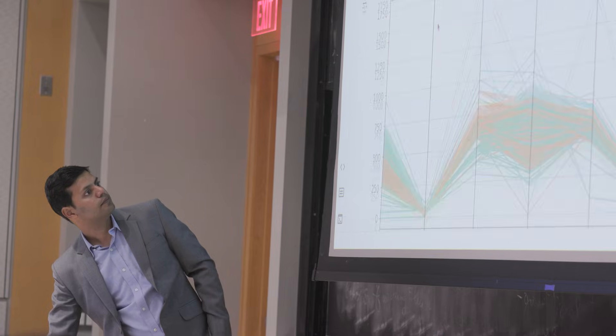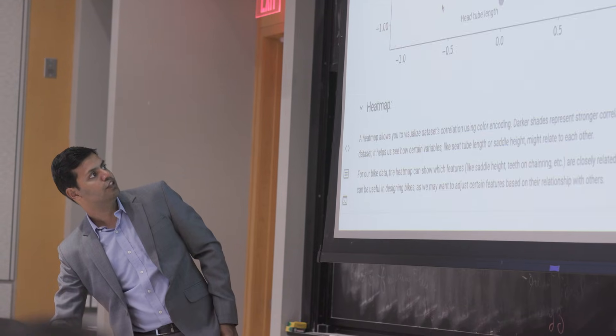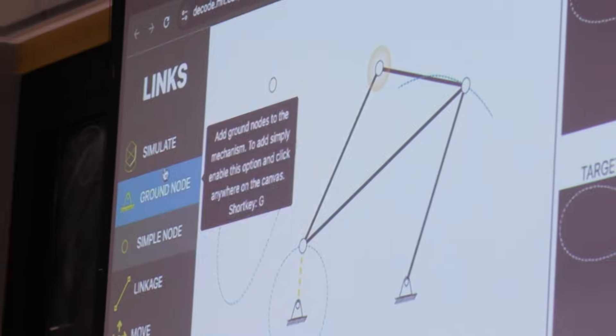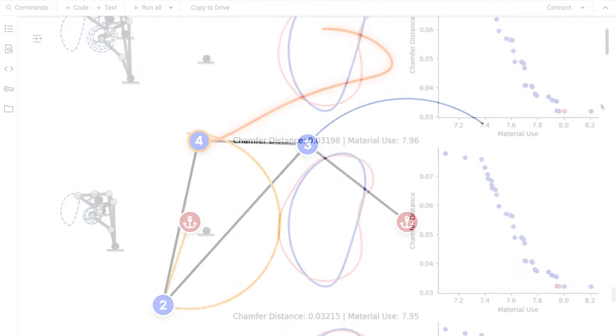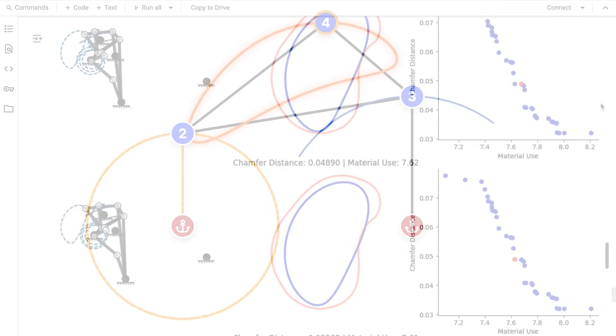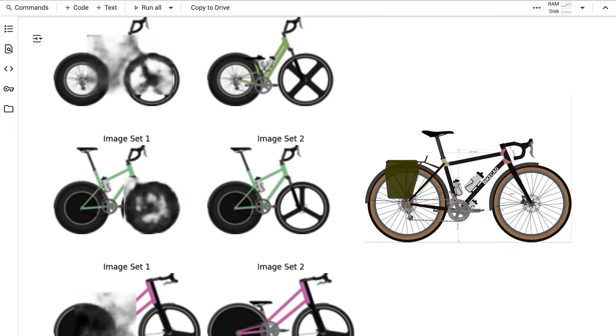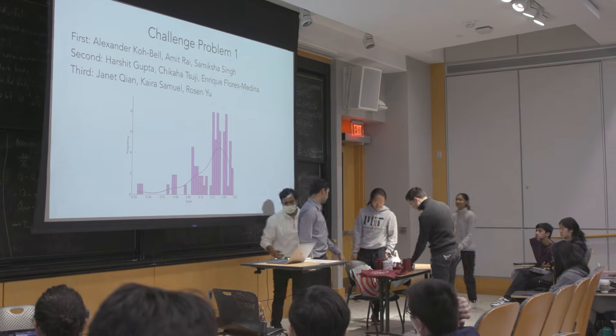My favorite part was probably the challenge problems. They gave us starter code which gave a solution, but it wasn't the best solution, and our task was: how can we do better? The first challenge problem was building a linkage mechanism that would trace a certain shape — it was primarily an optimization problem. We had bikes that had a certain portion hidden and we had to figure out the missing portion. We set it up as a friendly competition so that students could try out different approaches, and they were very engaging.